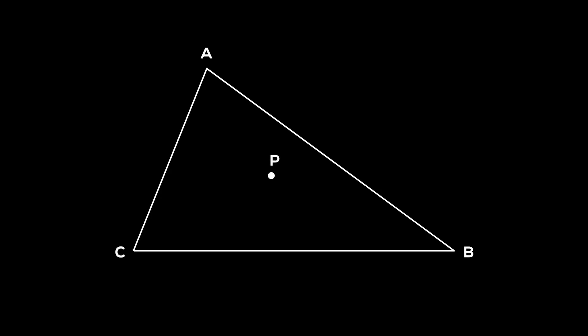Let P be an arbitrary point in triangle ABC. Extend AP to the opposite side BC, where they intersect at point D.